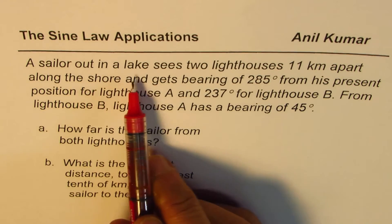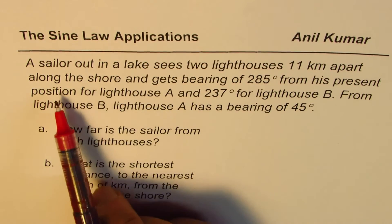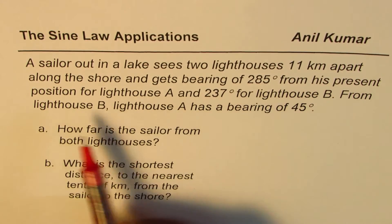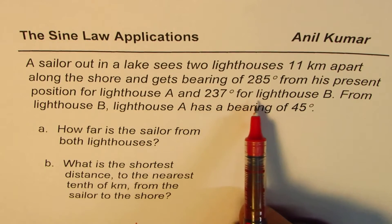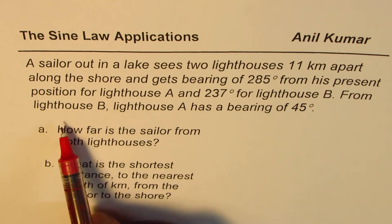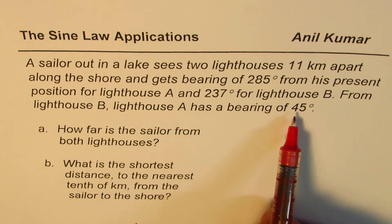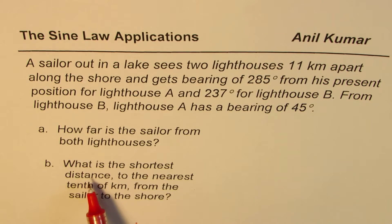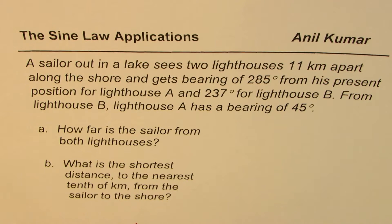A sailor out in a lake sees two lighthouses 11 km apart along the shore, and gets a bearing of 285 degrees from his present position for lighthouse A and 237 degrees for lighthouse B. From lighthouse B, lighthouse A has a bearing of 45 degrees. How far is the sailor from both lighthouses? What is the shortest distance to the nearest tenth of a kilometer from the sailor to the shore?